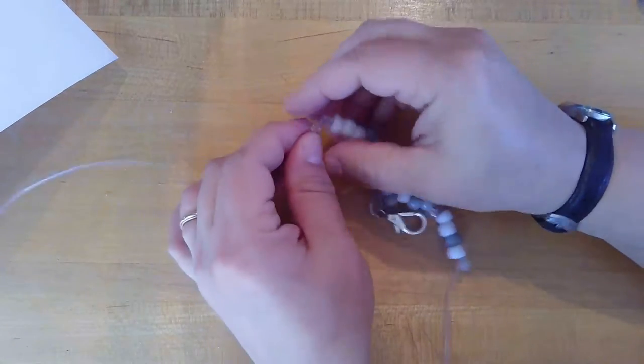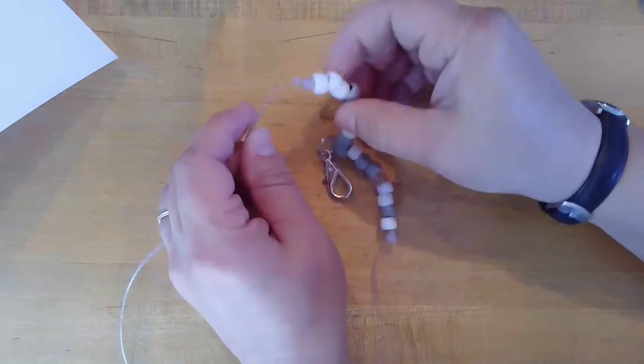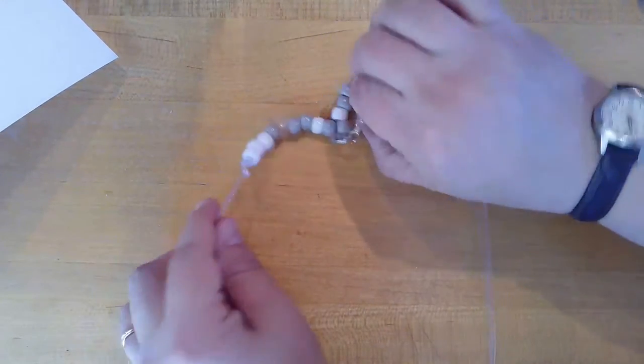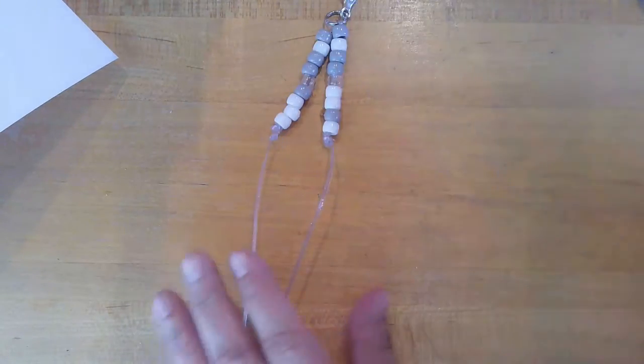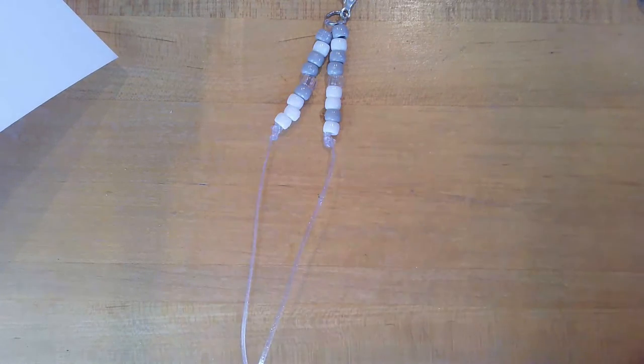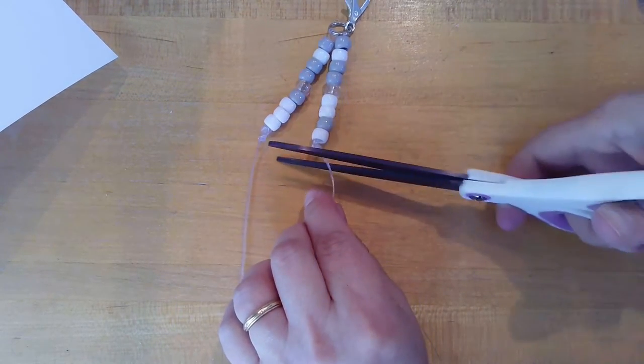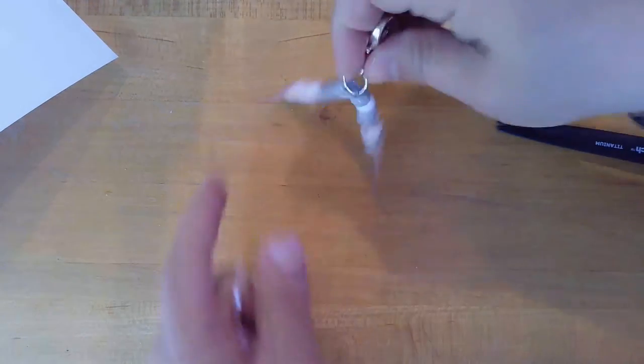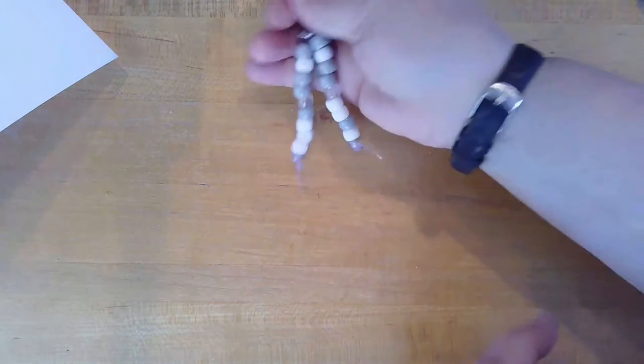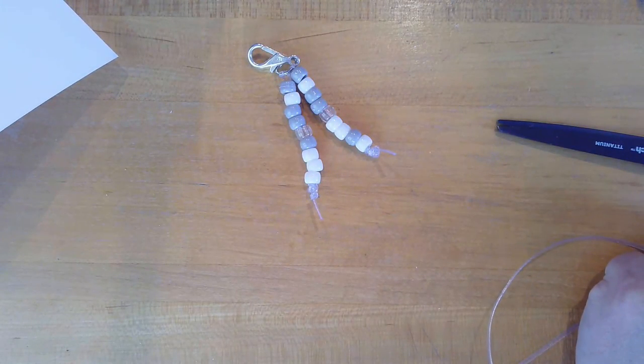And then once I'm happy with it and it's all set, I can trim the excess cording off with a pair of scissors if I want. Or you can leave it long. It's up to you. But I'm going to trim it below the knots. And later I'll go and put some glue in there. And there I've got my initials on a neat keychain. Or you can hang it from a backpack. Whatever you want.